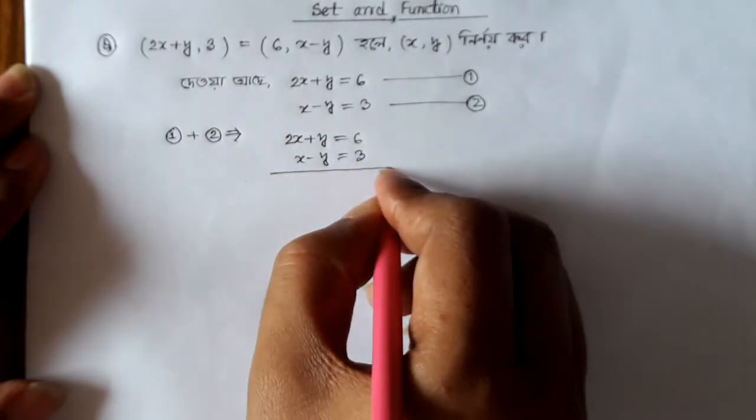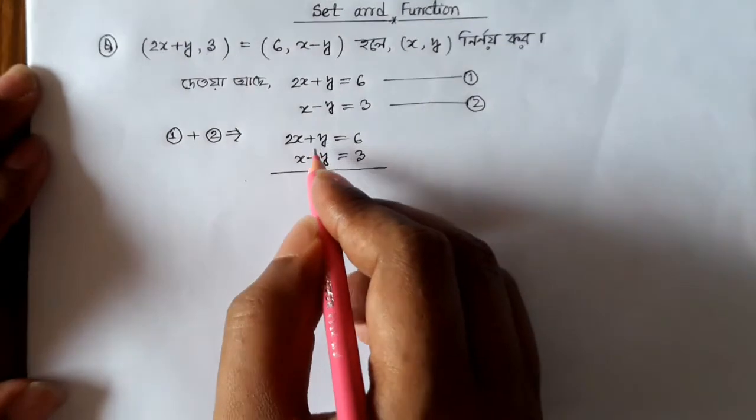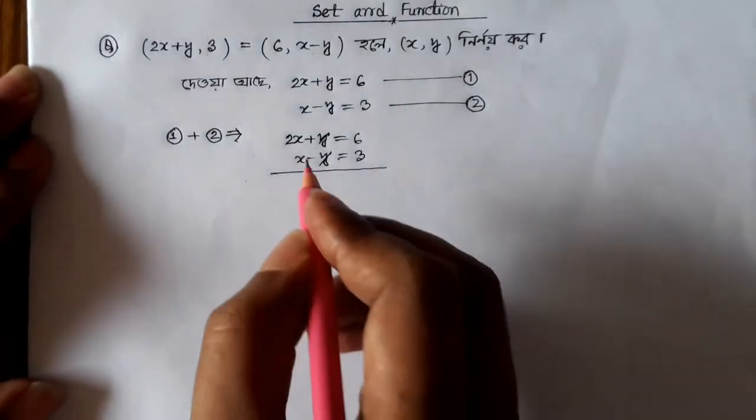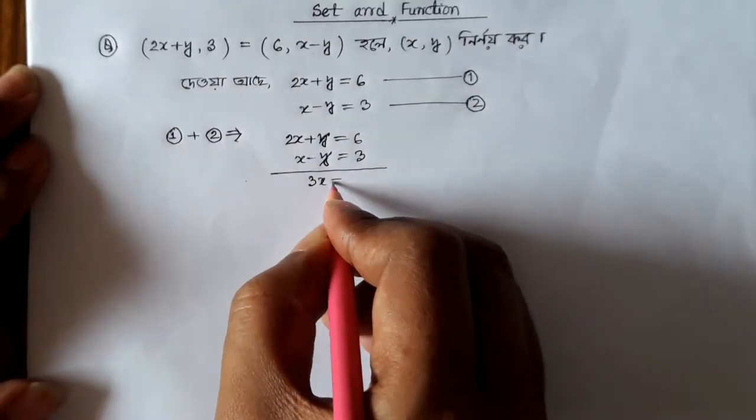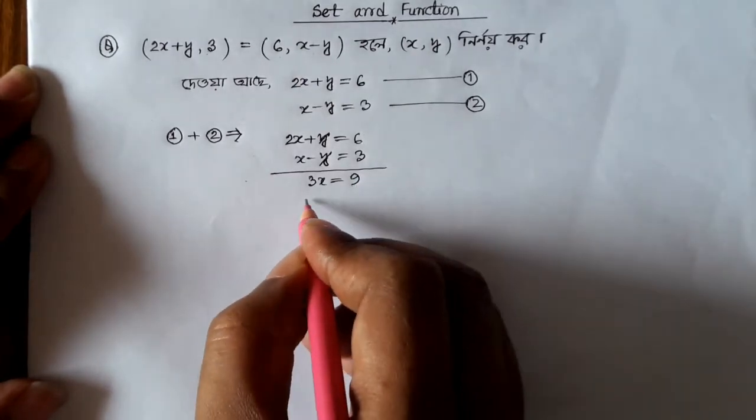When we add these equations together, plus y and minus y cancel out. So 2x plus x gives us 3x. On the right side, 6 plus 3 equals 9. Therefore 3x equals 9, which means x equals 3.